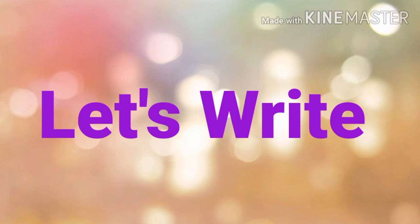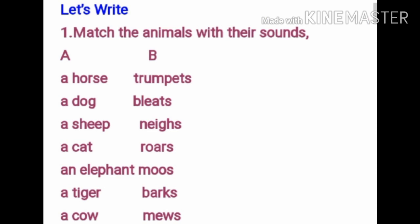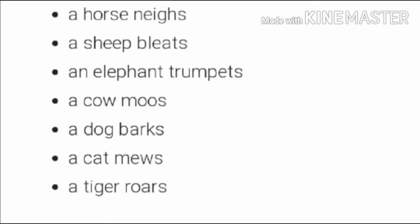Now let's write. First of all, match the animals with their sounds. A horse neighs, a sheep bleats, an elephant trumpets, a cow moos, a dog barks, a cat mews, a tiger roars. Aap is tarike se match karke hi kijiyega — you have to match it.